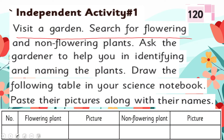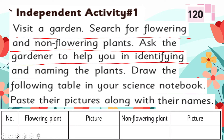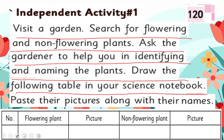The instructions are: visit a garden, search for flowering and non-flowering plants, ask the gardener to help you in identifying and naming the plants, draw the following table in your science notebook, and paste their pictures along with their names. First, draw a table in your science notebook with columns for flowering plants and their pictures, then non-flowering plants and their pictures.